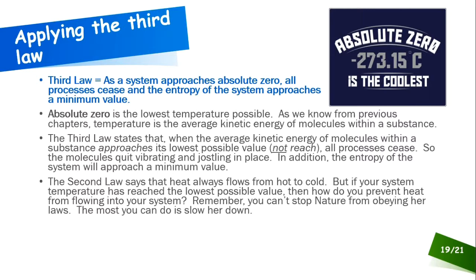The second law explains why you can't actually reach absolute zero. If you were at the coldest possible temperature, you wouldn't be in thermal equilibrium with anything. Heat naturally flows from hot to cold, so nature would keep trying to restore balance by sending heat toward that absolute zero point. The closer you get to absolute zero, the further you are from thermal equilibrium, and the more impetus nature has to pull you back.